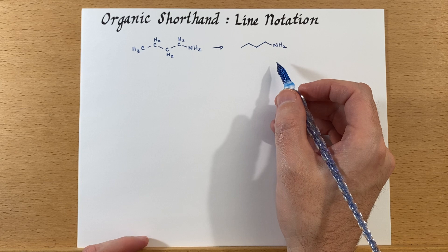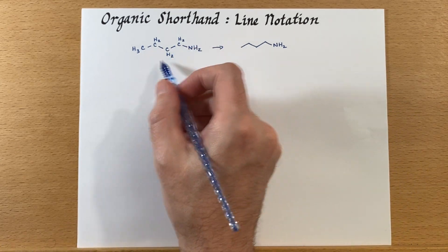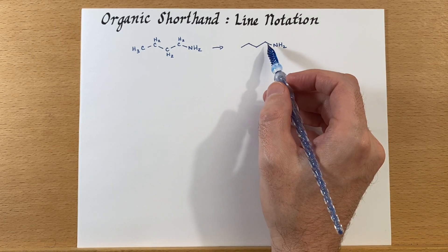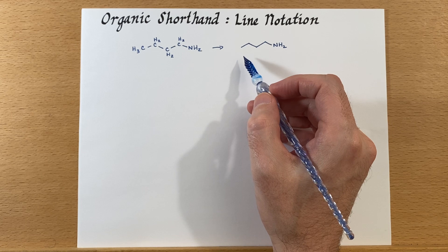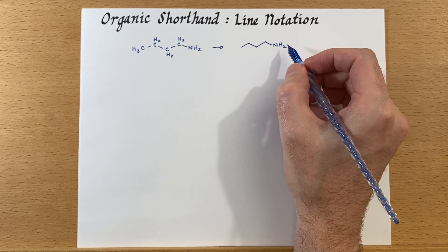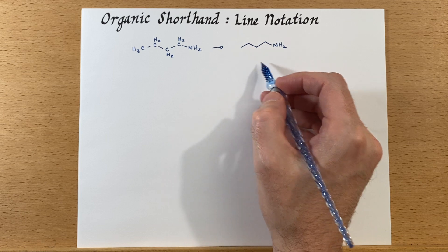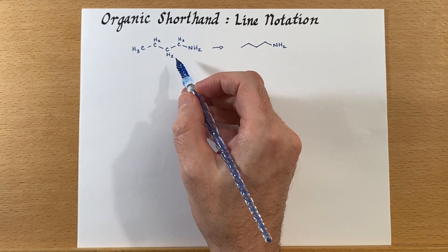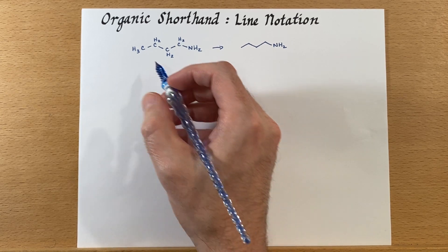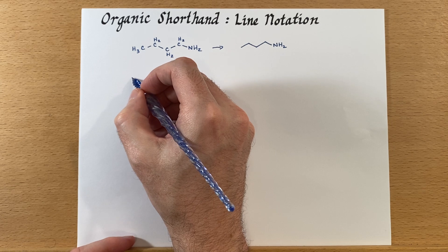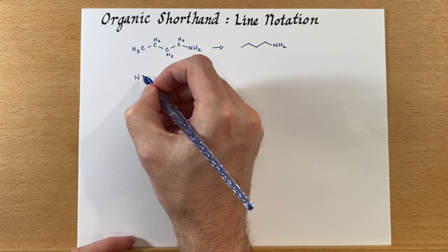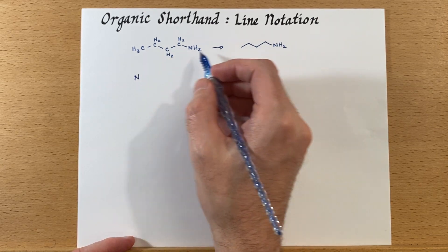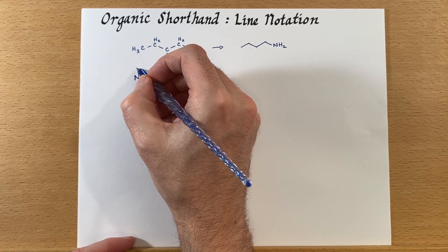You might ask why we use line notation — aren't those carbons important? Yes they are, and that's why we're indicating they're here. Part of the reason is look at how much cleaner and faster I can draw this structure versus the full one. The other thing is it allows us to see the molecule a lot more simply — I can see the structure much more easily.